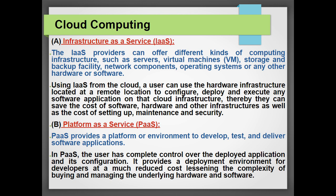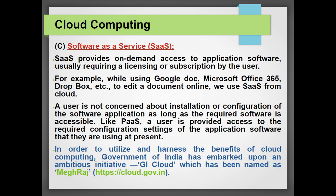Then comes Platform as a Service, abbreviated as PaaS. Here the user has complete control over the deployed application and its configuration — that is what is happening in Google Drive. It provides an environment for developers at a much reduced cost. You can store up to 15 GB for free, after which you have to pay. You have complete control of the deployed application, and you can manage your data without buying hardware or software.